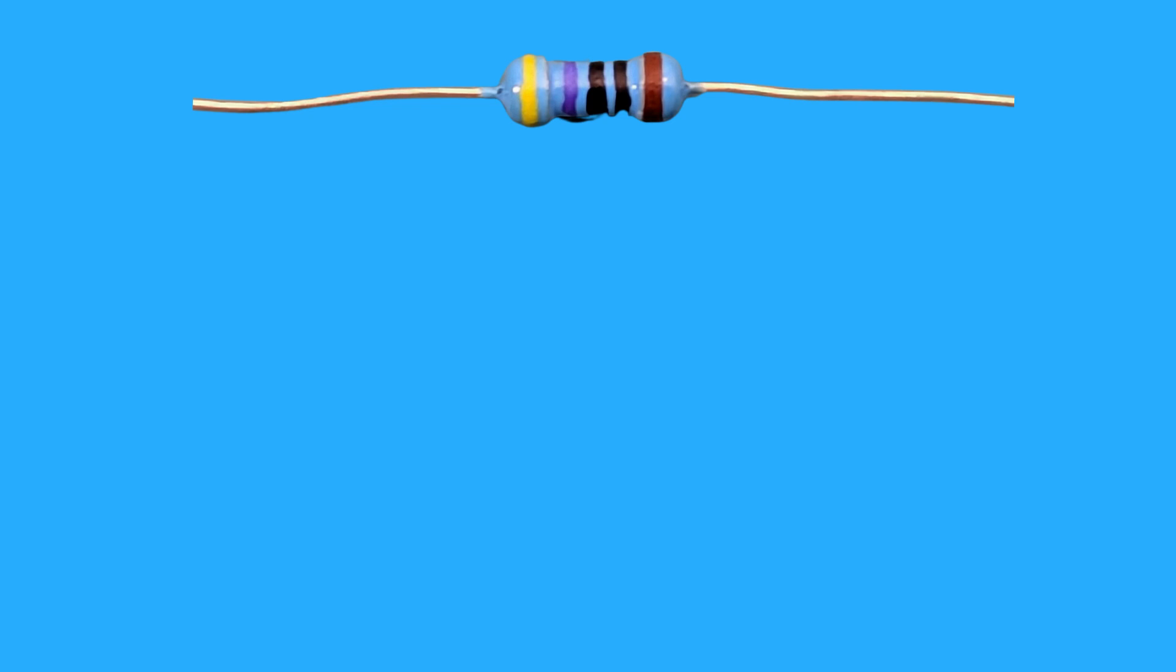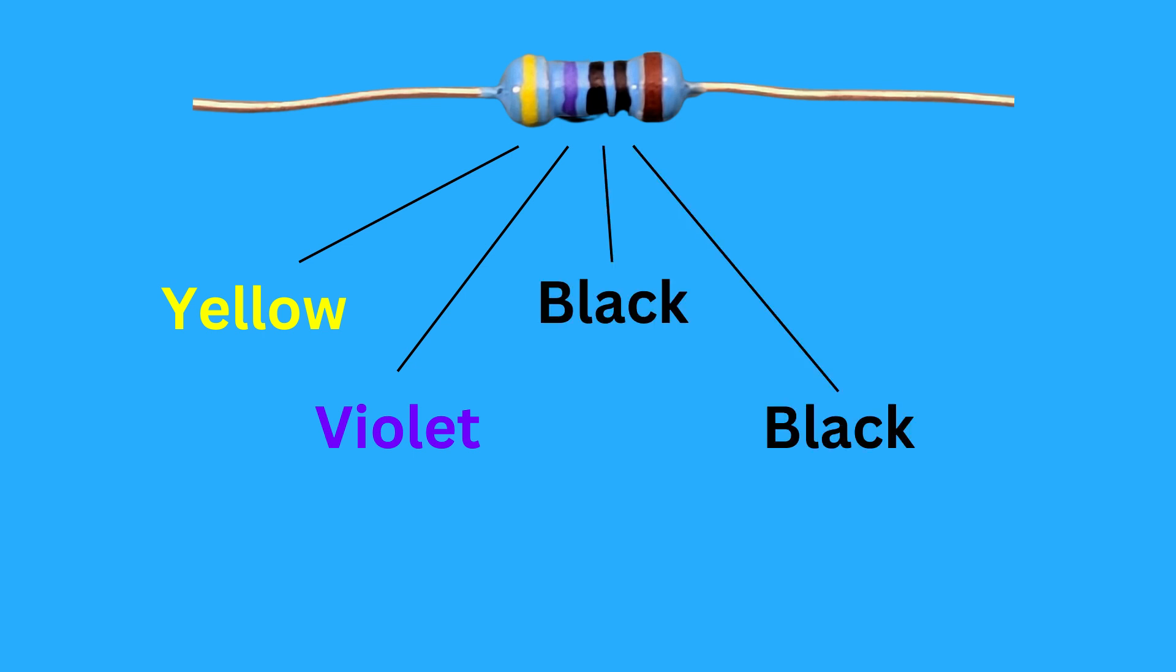Let's go through an example. The first band has a yellow color. The second band has a violet color. The third band has a black color. The fourth band has a black color. The fifth band has a brown color.